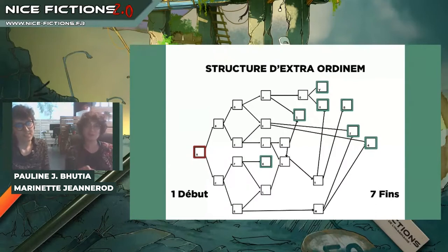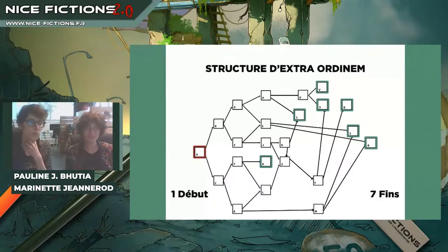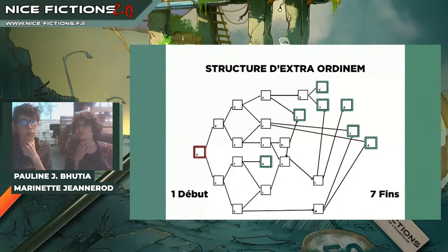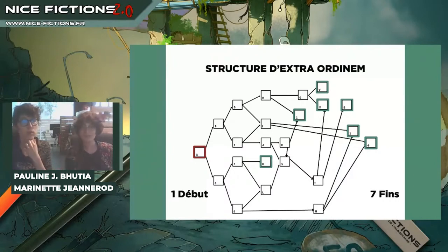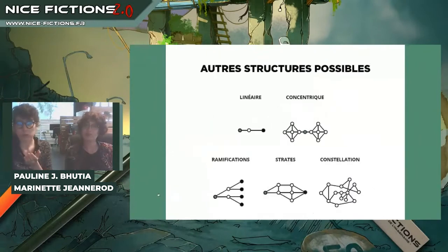On voit que la structure d'Extraordinaire est posée en rhizome, en ramification. Il y a d'autres structures qui existent, qu'on a découvertes en faisant plusieurs recherches sur Internet. C'est notamment basé aussi sur le travail de Benjamin Onguet qui tient un super site Internet qui fait référence à toutes sortes de récits avec des narrations différentes d'interactivité et de transmédia. Voici plusieurs autres structures possibles.